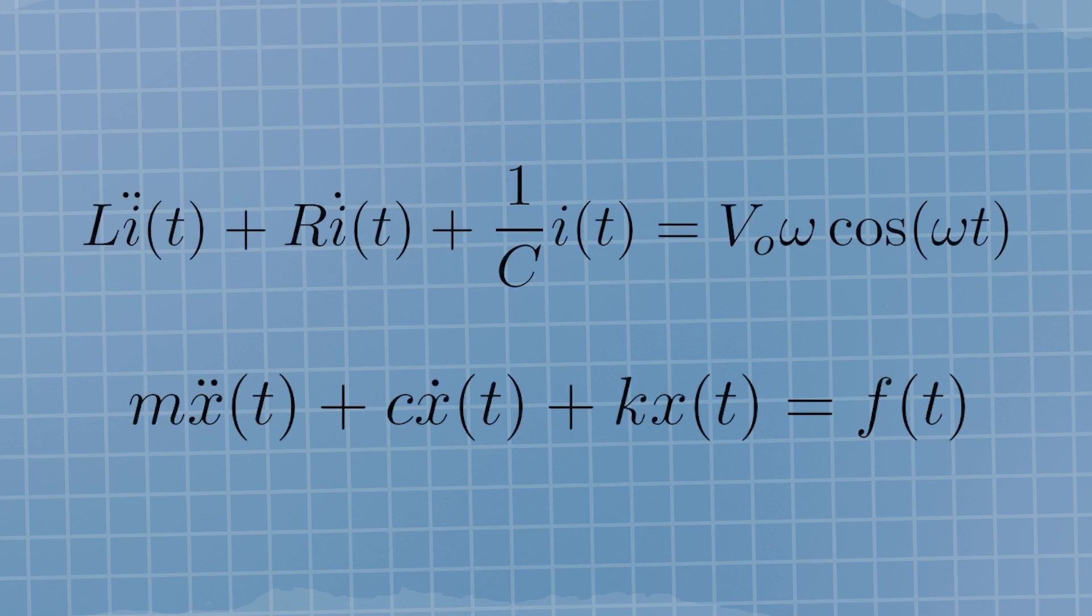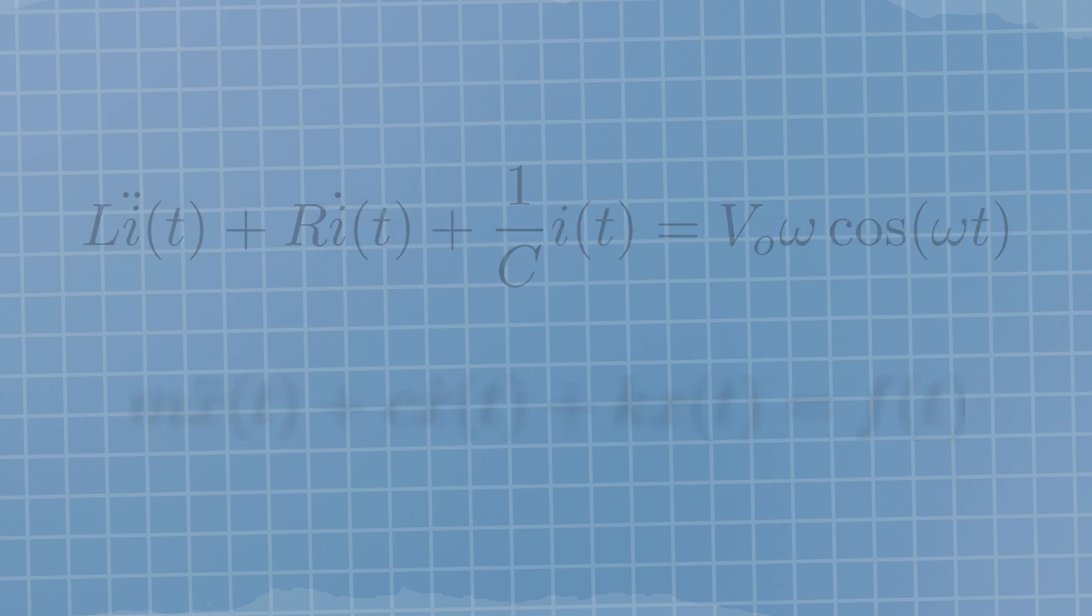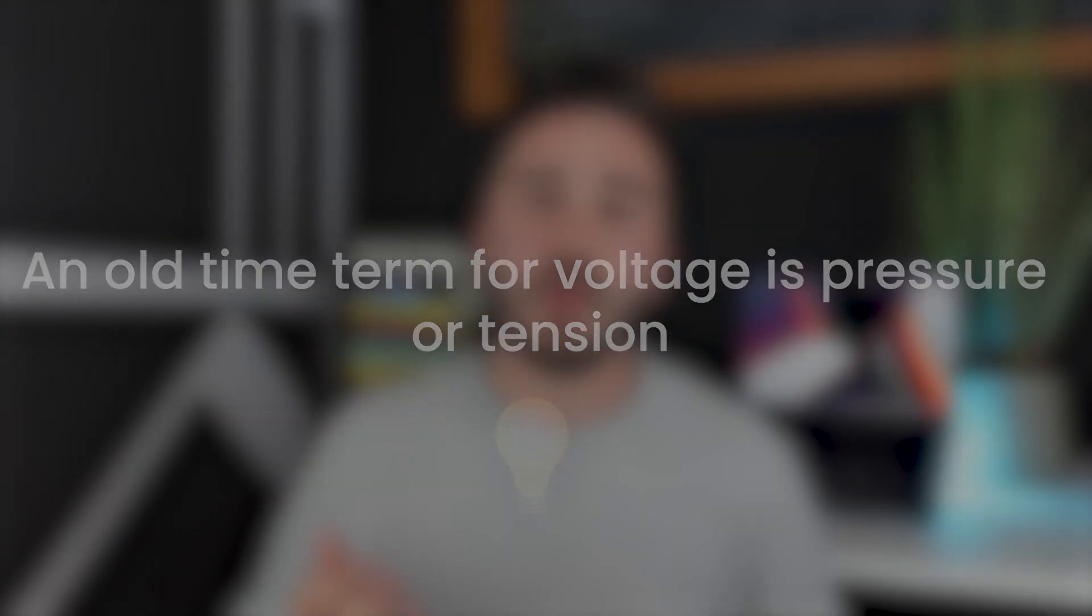Moving then to electrical systems, we may add an inductor and use a voltage source. Looking at the differential equation for a linear circuit and for our linearized discrete system, we can equate the velocity with the current and the force with the voltage. Actually, an old-time term for voltage is pressure or tension. This analogy with the discrete mechanical system is called the Maxwell or impedance analogy.